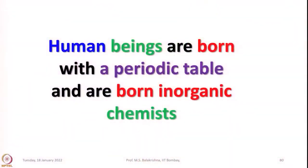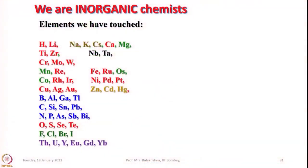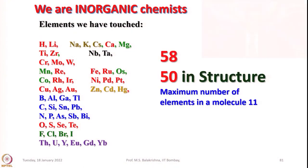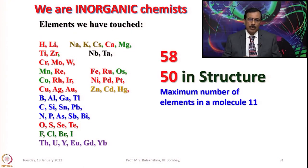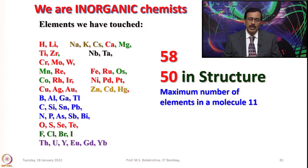This table shows the elements found in the human body by mass. Elements up to magnesium — shown in blue — are essential for human beings, with their proportions in our body listed. Some elements are found in minute quantities, and some that are not needed for good health are present due to environmental exposure. This indicates that human beings are born with a periodic table and are effectively born inorganic chemists. In our own laboratory, out of 58 elements used, 50 were found in structures determined by X-ray crystallography, and we made compounds with a maximum of 11 elements in a single molecule.